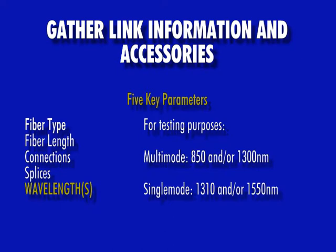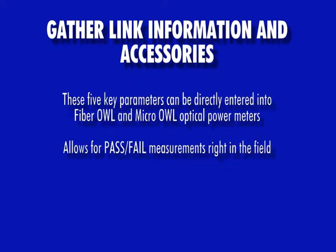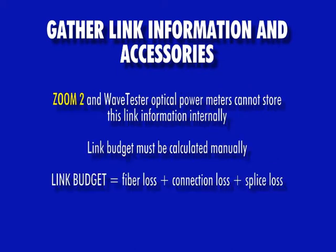Lastly, the user must determine what wavelengths they will test at. For multimode, this is 850 and/or 1300 nanometers. For single mode, this is 1310 and/or 1550 nanometers. When using a Micro OWL or Fiber OWL optical power meter, these parameters can be entered directly into the device to calculate the link budget. However, if the link budget needs to be calculated manually, this is done by adding together the fiber loss, connection loss, and splice loss.